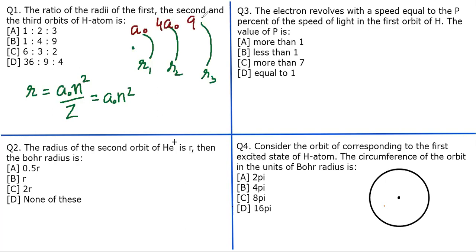And third is 9a₀, so you can clearly see the ratio comes out to be a₀ : 4a₀ : 9a₀. You cancel this thing out, that is 1:4:9.